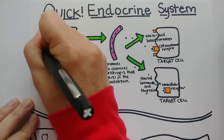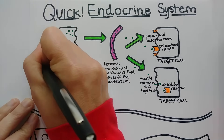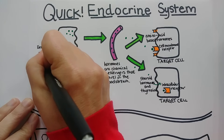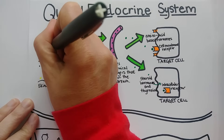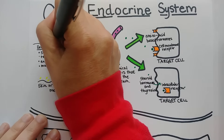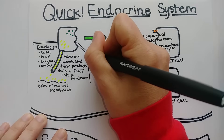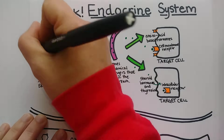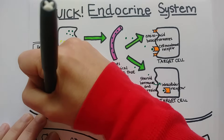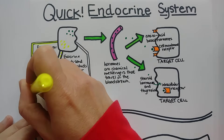Some examples of exocrine products would be sweat, tears, digestive enzymes that go into the stomach and intestine, and mucus. This distinction comes up often on standardized exams: exocrine glands release their products onto a membrane and have ducts, whereas endocrine glands do not have ducts and release their products into the bloodstream.